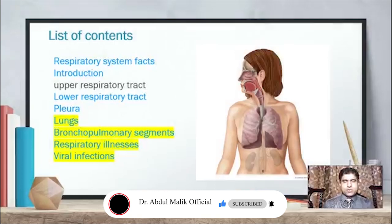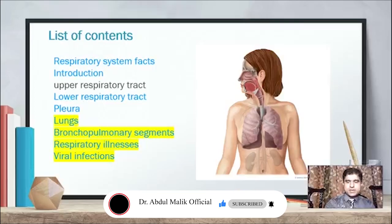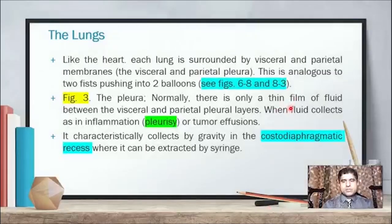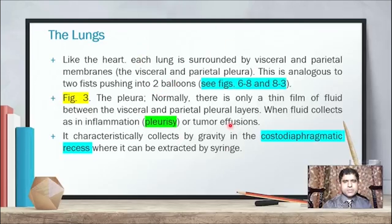The contents we have not yet studied include pleura, lungs, bronchopulmonary segments, respiratory illnesses, and viral infections which are common diseases. Now we will discuss the lungs. We have skipped the upper portion, trachea, and moved directly forward. Like the heart, each lung is surrounded by visceral and parietal membranes — visceral and parietal pleura.